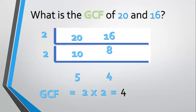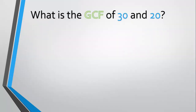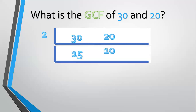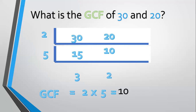Another example — how about 30 and 20? List them: 30 and 20. The common factor is 2. 30 divided by 2 equals 15. 20 divided by 2 equals 10. Then divide again by 5. 15 divided by 5 equals 3. 10 divided by 5 equals 2. There's no more common factor for 3 and 2, so we multiply: GCF equals 2 times 5 equals 10. The answer is 10.